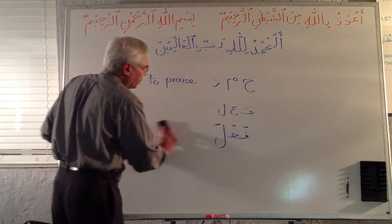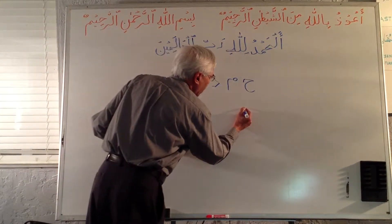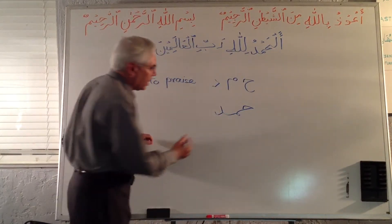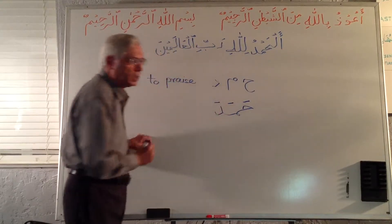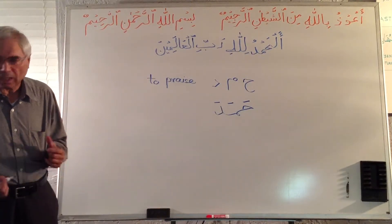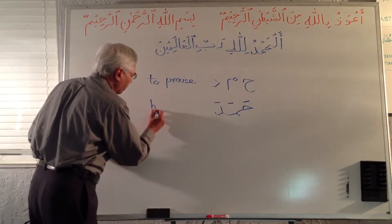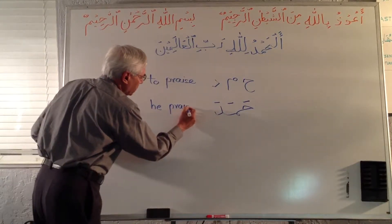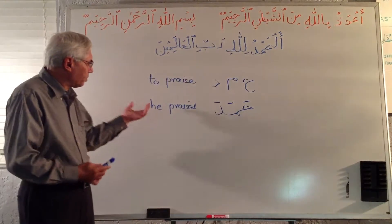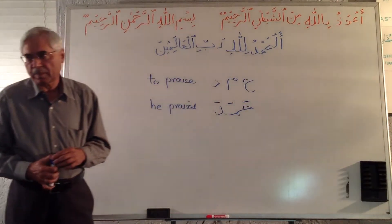Now let's go to the Quran. We have three letters: Ha, Meem, and Dal. If I do the same thing — take Ha, Meem, and Dal, combine them together, and put three Fatahs on each one — this will be pronounced Ha-Ma-Da. The meaning of this word: third person past tense — 'praised.' Very simple.